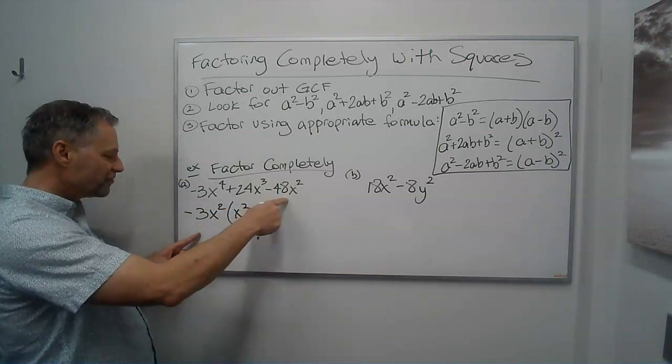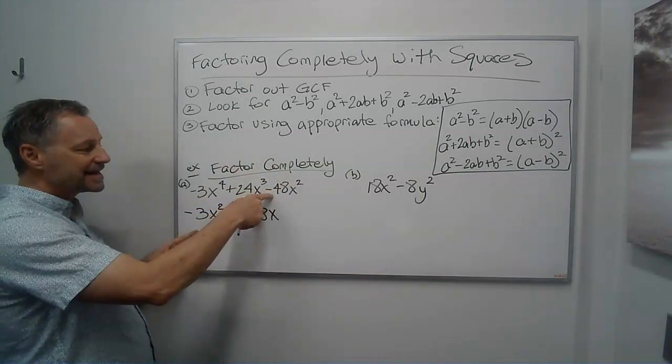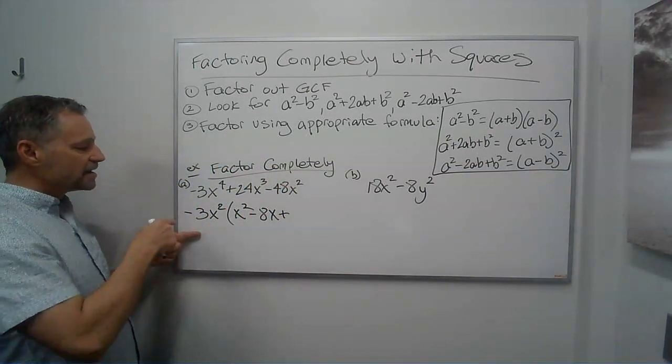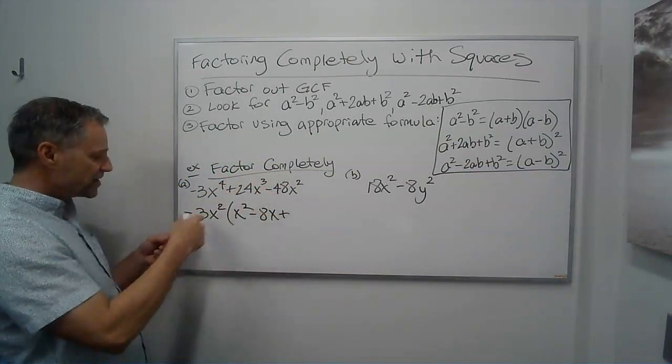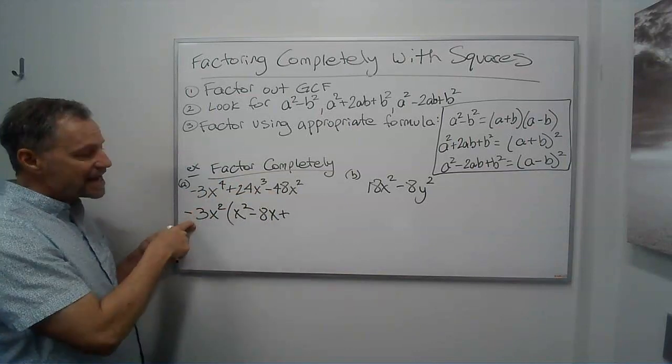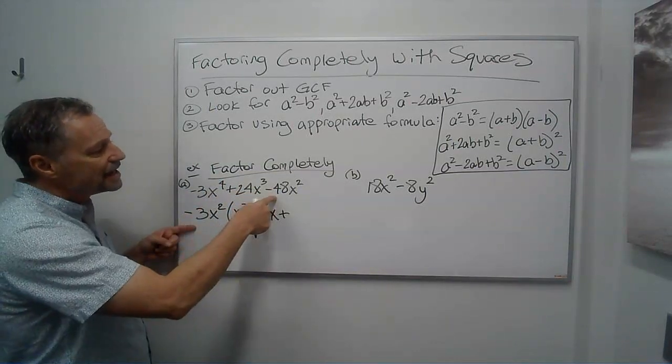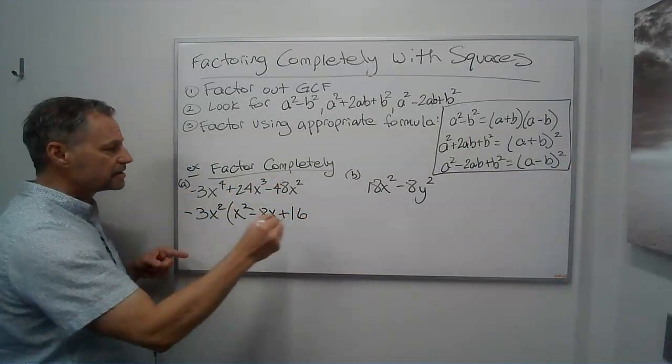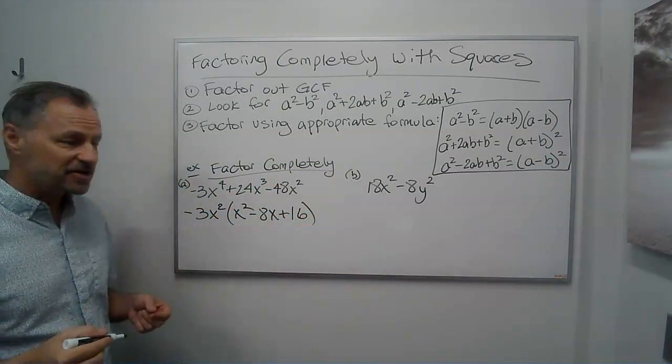And x squared, I still have an x. And then over here, I'm going to factor out, again, the negative. It's going to change it to a positive. And then I factor out, I've got 48. I factor out the 3. I've got 16. And I already took the x squared out. So that's what it factors into.